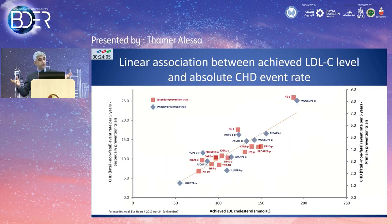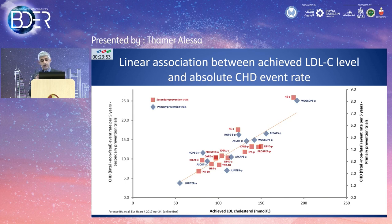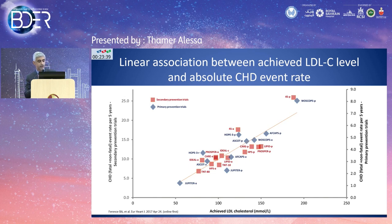These therapies combined, especially the mainstay statins, have helped greatly in reducing LDL. When we reduce LDL, we can definitely reduce coronary heart disease. Landmark trials on statin use with combination therapies have targeted lower LDL levels — both in primary prevention (blue) and secondary prevention (red) — demonstrating that with much lower LDL, we achieve much greater reduction in coronary heart disease.